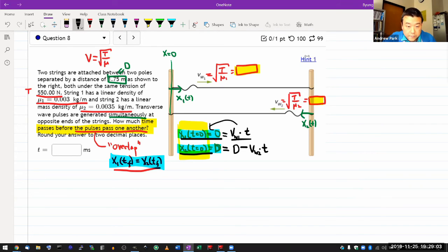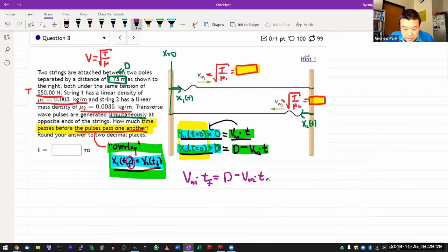Then, once you have these expressions, then what you can now do is recognize that this expression here means, oh, the top expression, Vw1 times t is equal to d minus Vw2 times t. At this particular time that I'm labeling as t, and that's the time that they're looking for. So, solve this expression for t, plug in the numbers, make sure you are giving your answer in unit of milliseconds, you should be good to go.